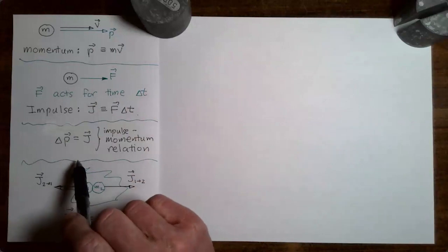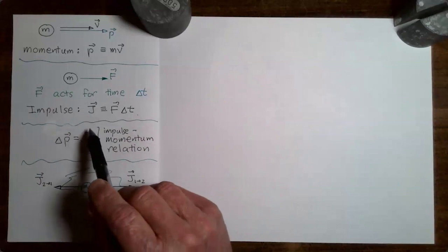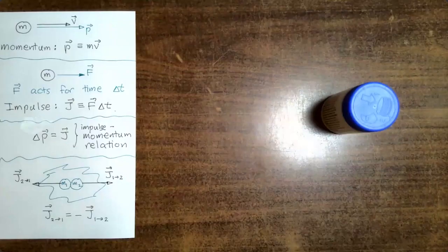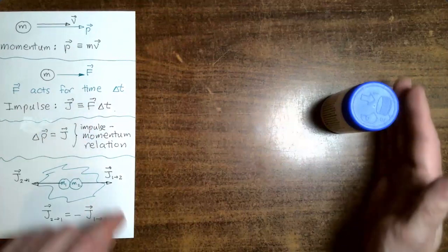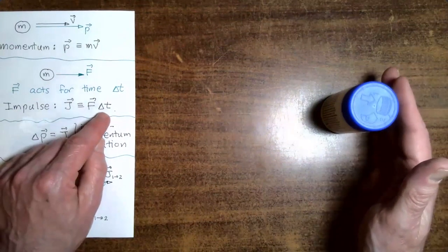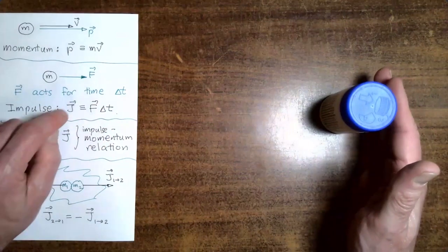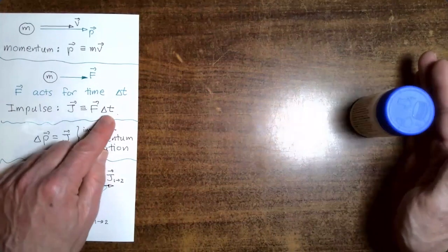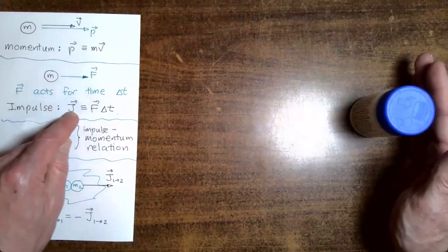In the previous video, we also put the ideas of momentum and impulse together in what is called the impulse-momentum relation. As a quick demonstration, let's say I take this pill bottle here. If I take a force from my hand and apply that force for a short time interval, that would be a small impulse. If I apply it for a long time interval, that would give me a big impulse.